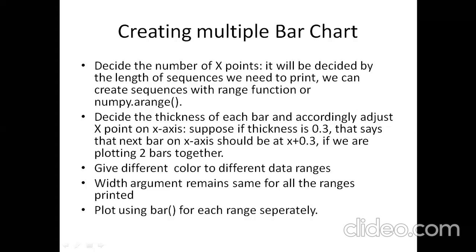The width decides the thickness of each bar. If you are drawing three bars together on the same plot area, they cannot overlap. So if one bar is at position 0.3 on the x-axis with a thickness of 0.3, the next bar should come at x plus 0.3. You can give different colors to different data ranges, but the width should remain the same for all ranges.